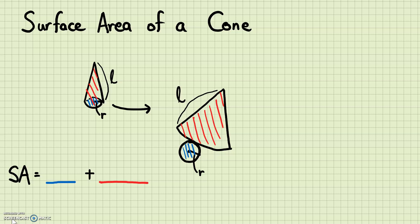The area of the blue circle is easy. If we know what R is — if R is the radius of that circle — then the area of that blue circle is going to be πR².